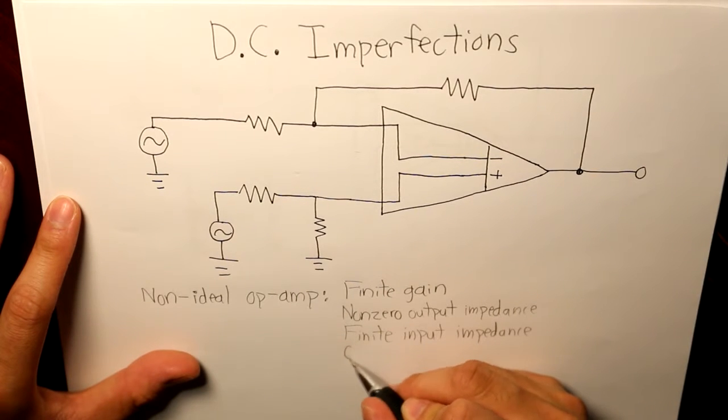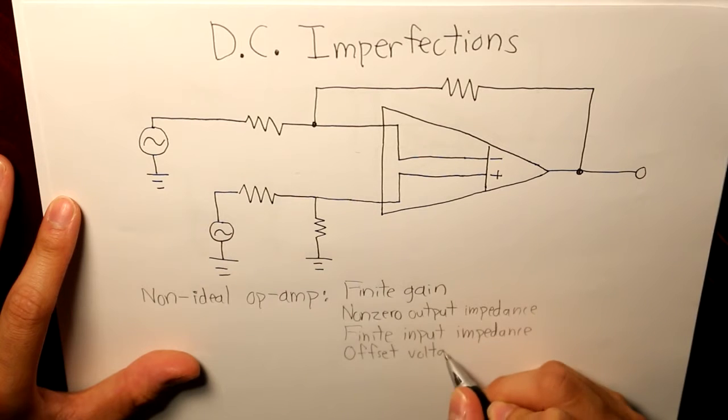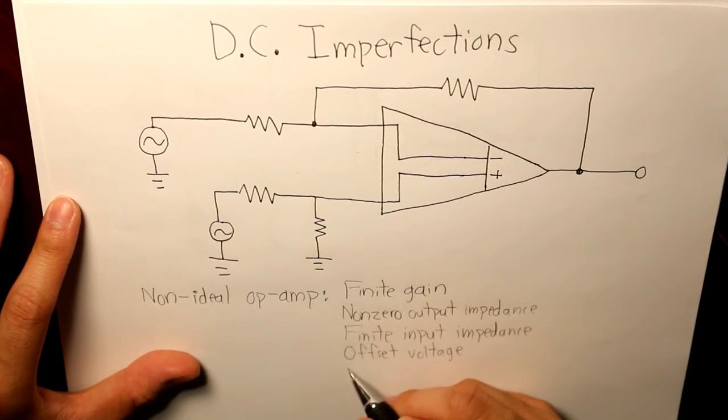Number four, offset voltage. And number five, biased current.